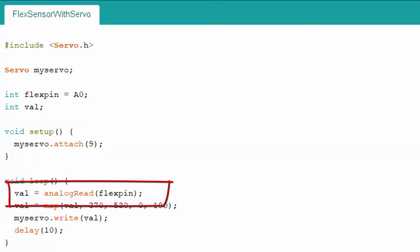Analog read will read flex sensor value between 0 to 1023 and assign it to the variable. Now we want to map this value to servo angle.